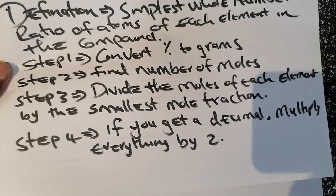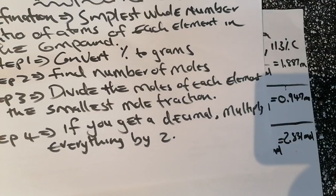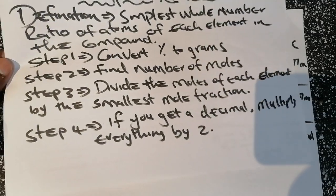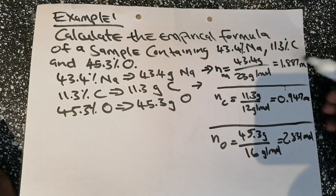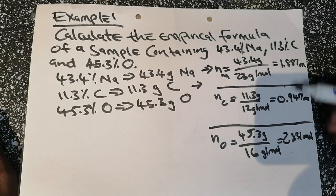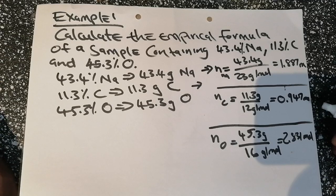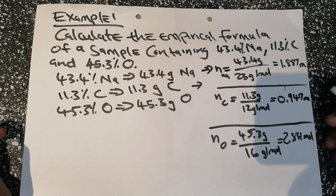Step three: divide the moles of each element by the smallest mole value. Among the three values — 1.887, 0.9417, and 2.831 — the smallest is 0.9417. We will divide everything by 0.9417.